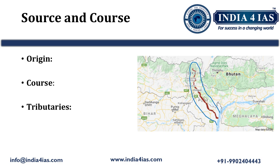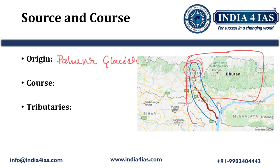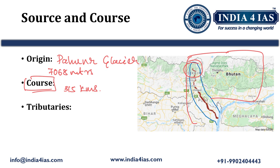The Teesta River is one of the major rivers in the eastern Himalayas. It originates from the Poundry Glacier located at an elevation of 7,068 meters in the Sikkim region. It flows through the Sikkim and Darjeeling hills of West Bengal in India and enters Bangladesh, where it eventually merges with the Jamuna River, which is one of the main tributaries of the Brahmaputra. The total length of the river is about 315 kilometers. Its major tributaries include the Rangpo and Rangit rivers.